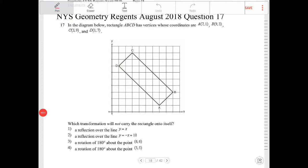In the diagram below, rectangle ABCD has vertices whose coordinates are represented by those numbers there. I'm not going to read it. Which transformation will not carry the rectangle onto itself?